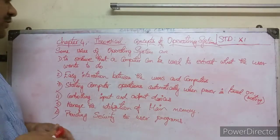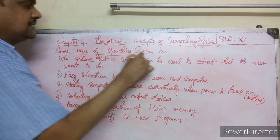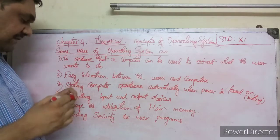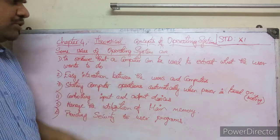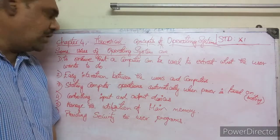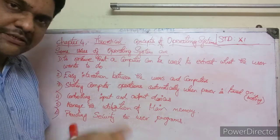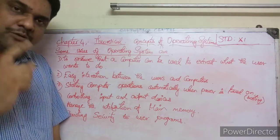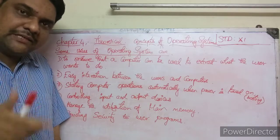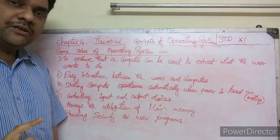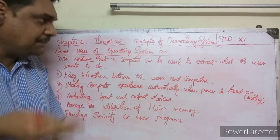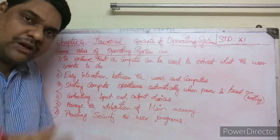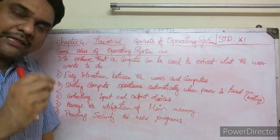Now let us see some of the uses of the operating system. First use: to ensure that a computer can be used to extract what the user wants to do. The operating system helps the user interact with the computer and get the desired output.